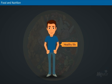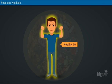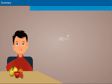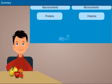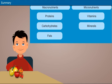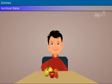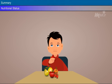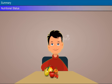Thus, by knowing the important aspects of food and nutrition, we can plan our meals wisely and lead a healthy life. Summary: carbohydrates, fats, and proteins are macronutrients, while vitamins and minerals are micronutrients. Nutritional status is the state of our body as a result of the foods consumed and their use by the body.